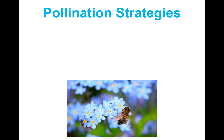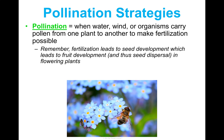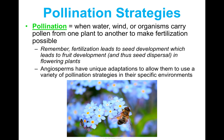Two last things to mention briefly: pollination strategies. Pollination is when water, wind, or other organisms carry pollen from one plant to another in order to facilitate fertilization — that egg and sperm meeting and fusing to form a zygote. Fertilization leads to seed development, which leads to fruit development in angiosperms and thus seed dispersal. Angiosperms have unique adaptations — such as color or the shape of their petals — to use a variety of pollination strategies for their specific environments, which you'll explore in the 'create a flower' activity.